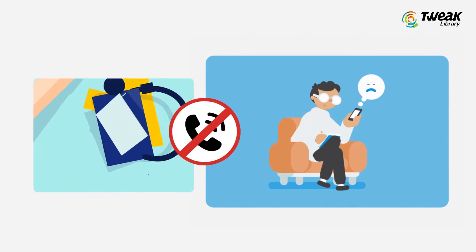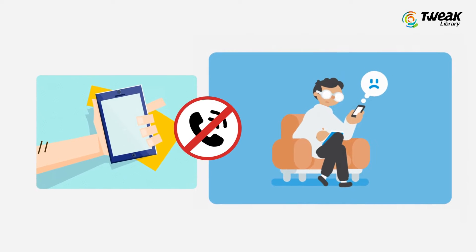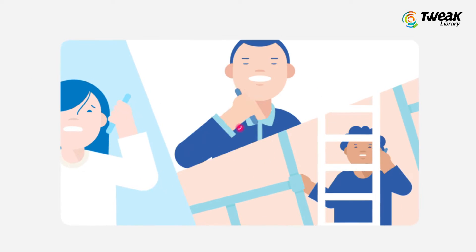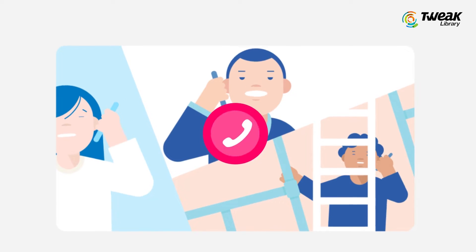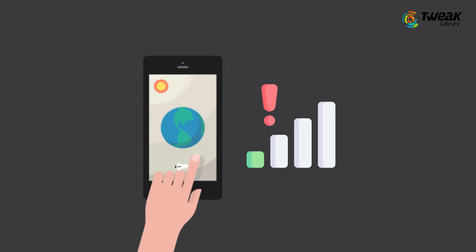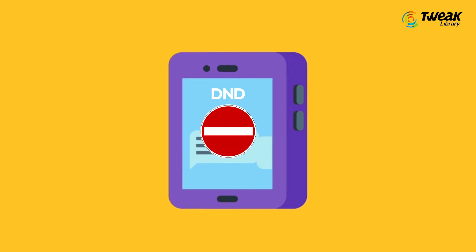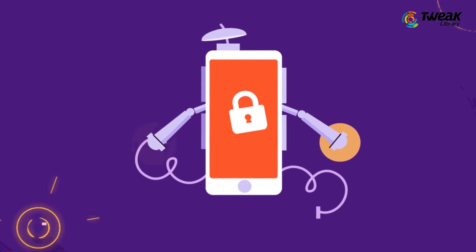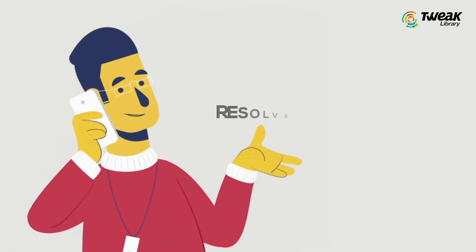If your Android phone is not receiving calls, you may find yourself unable to contact friends and family. A few immediate reasons behind this include no network coverage, an active Do Not Disturb feature, blocked phone numbers, or a malware issue. However, if none of these issues apply, let's try some fixes.